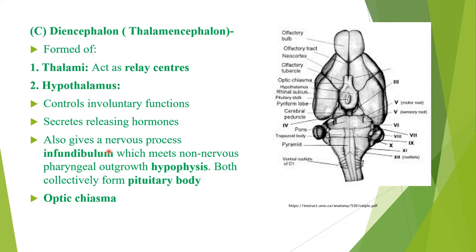The hypothalamus gives rise to a nervous process called the infundibulum, which meets the non-nervous pharyngeal outgrowth called hypophysis. Together, infundibulum and hypophysis are collectively called the pituitary body, which is the site for secretion of various hormones of the body. In front of the hypothalamus there is a cross of optic nerves called optic chiasma. In this diagram you can see the olfactory bulb, olfactory tract, optic chiasma, pituitary stalk, and cerebral peduncles.